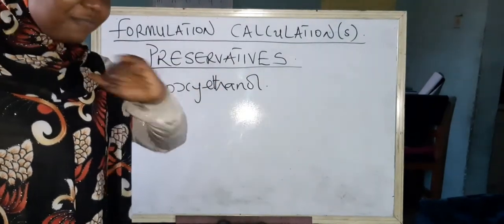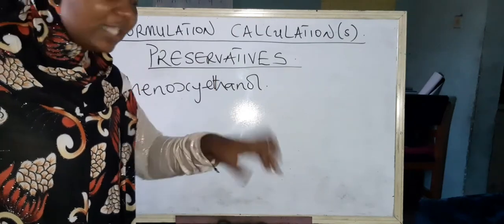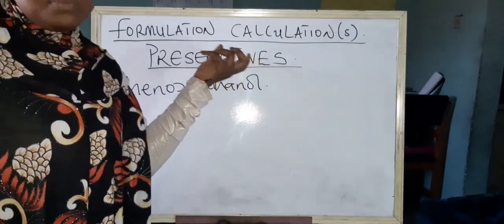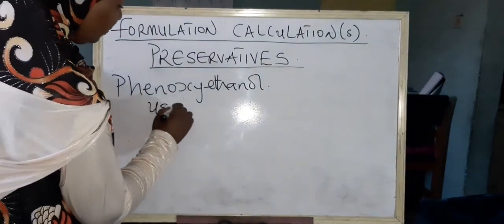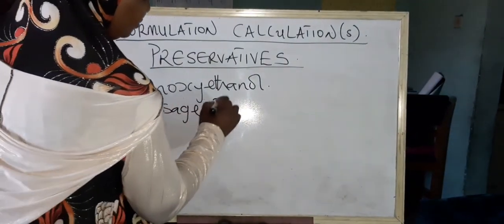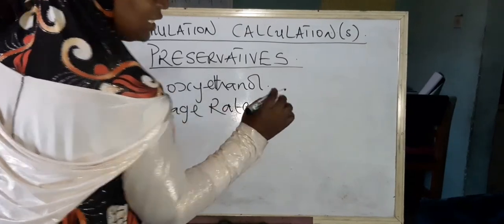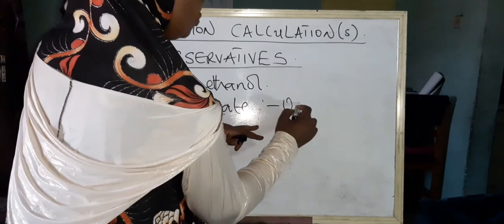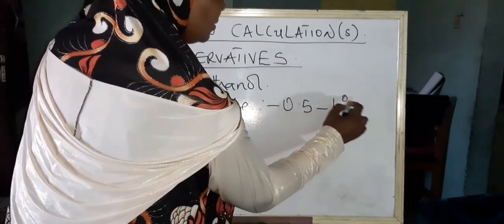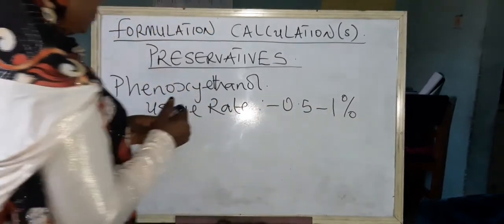But whatever formulation you're adding water into, it must follow with preservative. Now the usage rate of phenoxyethanol, the usage percentage rate to be specific, is about 0.5 to 1 percent.